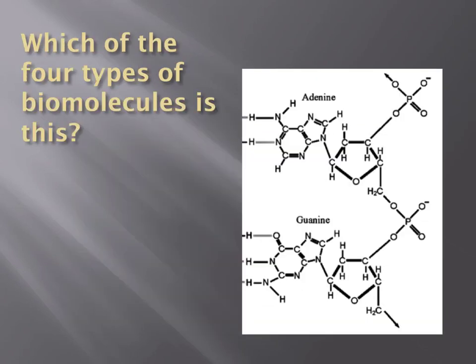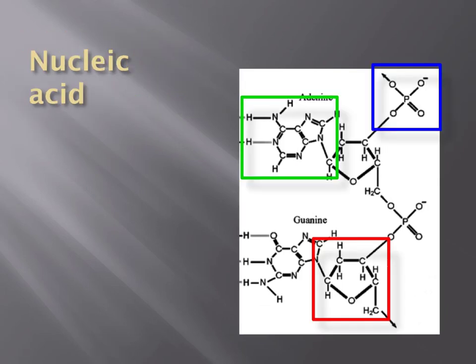Which of the four types of biomolecules is this? Take 15 seconds, make a guess, and explain why. This is an example of a nucleic acid. First, the elements contained are C, H, O, N, and P — carbon, hydrogen, oxygen, nitrogen, and phosphorus — which might lead you in this direction. Second, it contains three different components: in blue is a phosphate group, phosphorus surrounded by four oxygens; in red is a sugar, a ring made up of carbon, hydrogen, and oxygen; and in green is a nitrogen-containing base, rings made up of carbon and nitrogen. These are the three components that make up a nucleotide in nucleic acids.